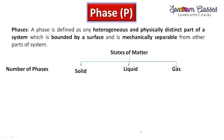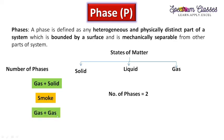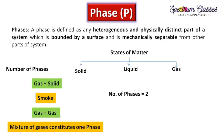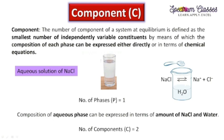For a gas-solid system: smoke is an example — solid carbon particles dispersed in the gaseous phase — so it constitutes two phases: one solid and one gas. For a gas-gas mixture: a mixture of gases always constitutes one phase only. This is how one can determine the number of phases in a given system. The number of components will be explained in the next video.